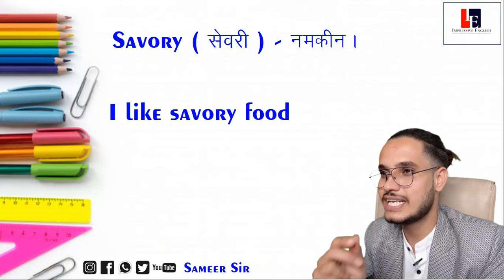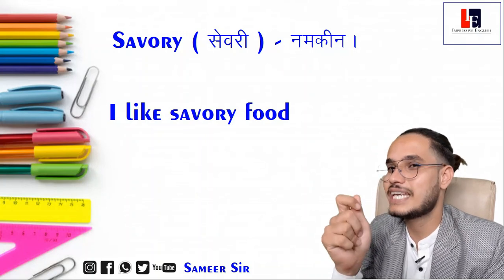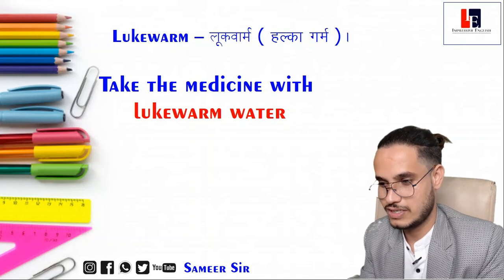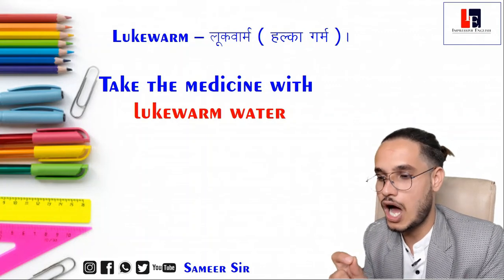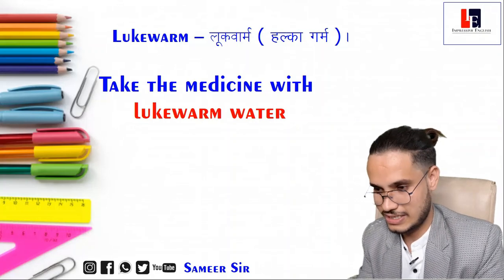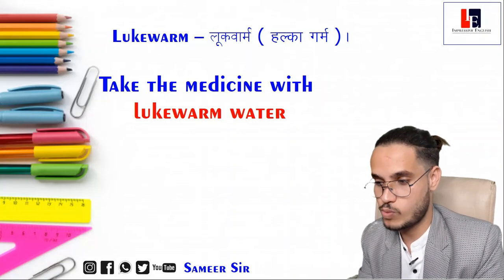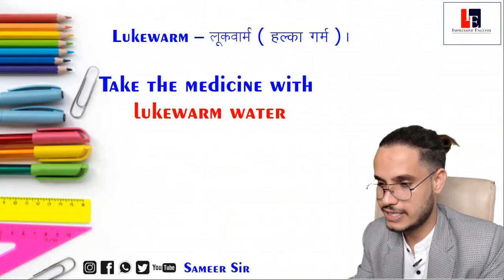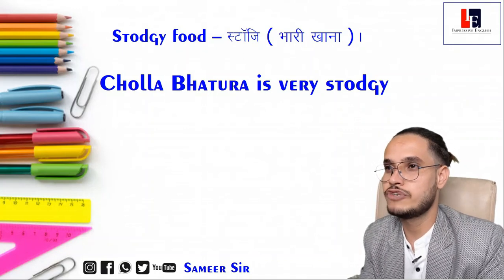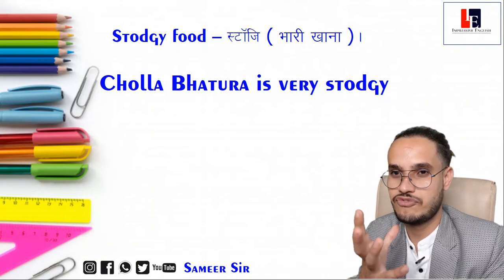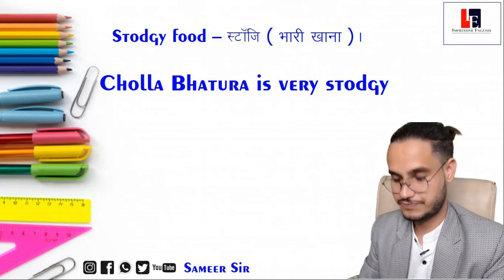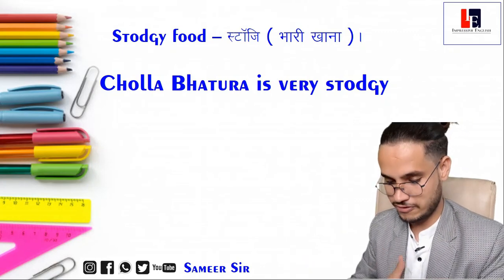Savory means the food which is a little salty. For example: I like savory food. And lukewarm — the water which is a little hot. That is called lukewarm water. For example: Take the medicine with lukewarm water. Next is stodgy food — the food which fills your stomach very heavily. For example: Chole bhature is very stodgy. I am full!